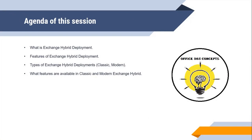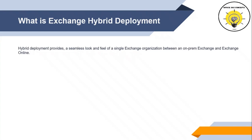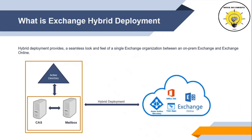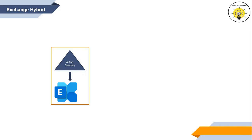Exchange Hybrid Deployment provides a seamless look and feel of a single Exchange organization between on-premise Exchange and Exchange Online. Hybrid deployment lets two different organizations work as a single organization. For example, an on-premise organization that has on-premise Active Directory and on-premise Exchange Server hosting mailboxes within their own environment.